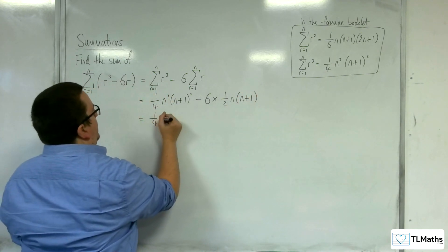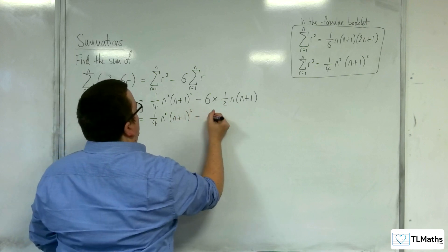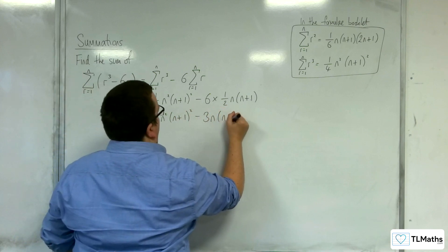So we have the 1 quarter n squared n plus 1 squared, take away 3n n plus 1.